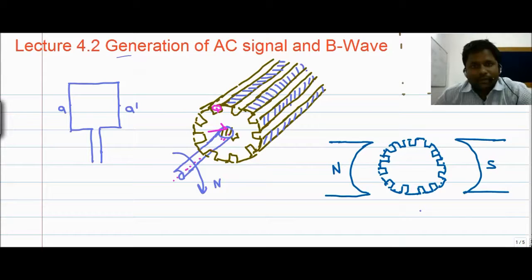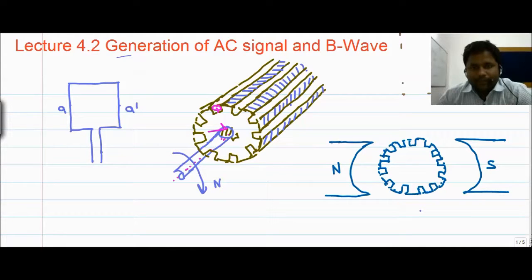Good morning to all of you, welcome to the pre-lecture series on electrical engineering. This is lecture number 4.2 where we are going to discuss the generation of the AC signal and B wave in any kind of machines.